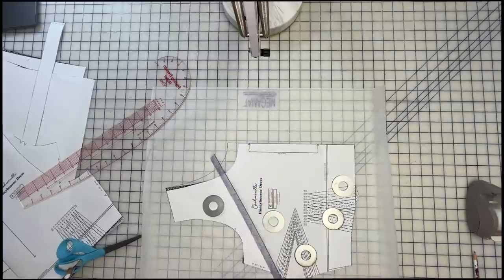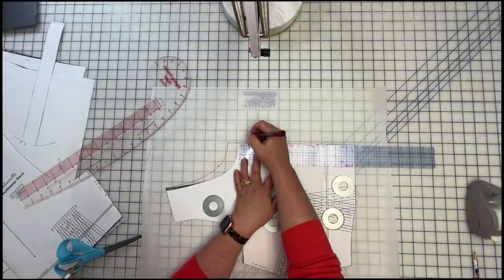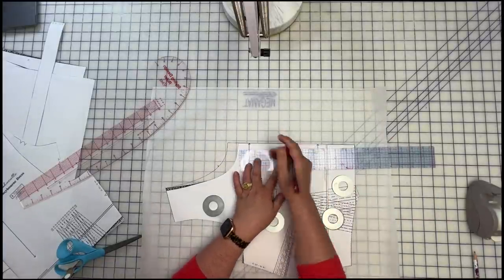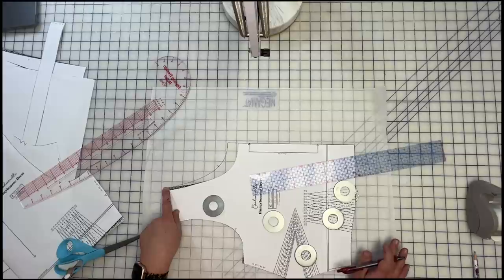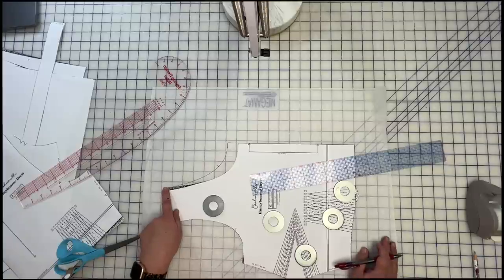Conversely, if you want to lower a neckline, same thing. We're just going to go down an inch and then do the same drawing in of that neck edge. And you would have to remeasure it to make sure that your length of the neckline is the same. And if you have a facing, you would just need to draft another facing. And again, I'll show you that in a minute.